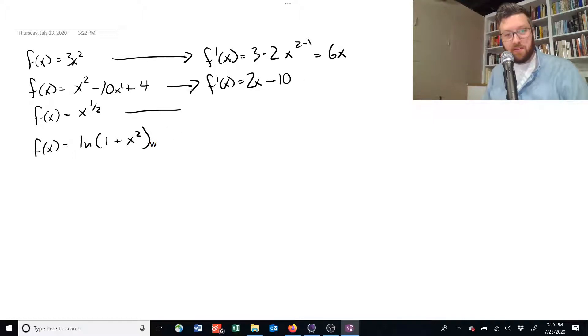Okay, what if we have x to the power of 1 half? We're going to use our same square root rule, or our same exponent rule. We're going to bring the exponent down in front and subtract 1 from it. 1 half minus 1 is equal to x to the negative 1 half.